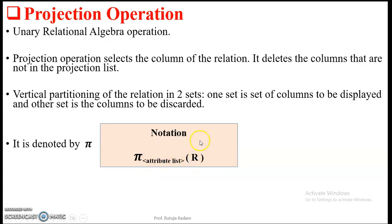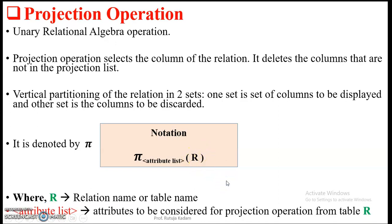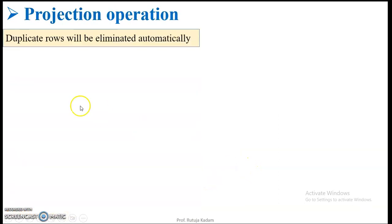The notation of projection operation is PI, followed by the attribute list, where R stands for the relation name. So R is the relation name or table name, and the attribute list is the attributes to be considered for this projection operation from relation R. This projection operation also eliminates duplicate rows.